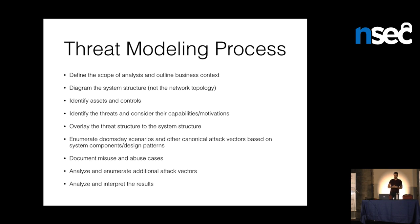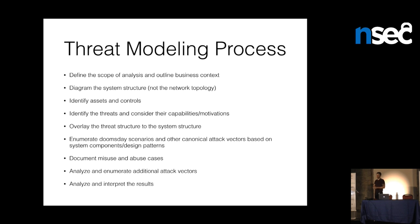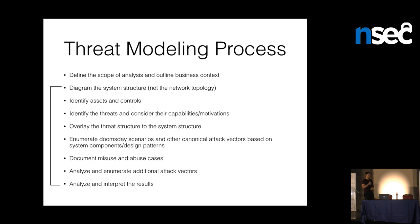Once we understand where everything fits together, we start to enumerate doomsday scenarios — the business-ending events — and canonical attack vectors based on the technologies being used. Consider a standard banking web application: it has a back-end database, a front-end user-facing application, back-end services, and possibly a mobile-facing internet service. Based on those design patterns, we know a certain set of attacks automatically map to them. Then we iterate through, looking for different ways a threat actor can get through a component or set of components to reach an asset.